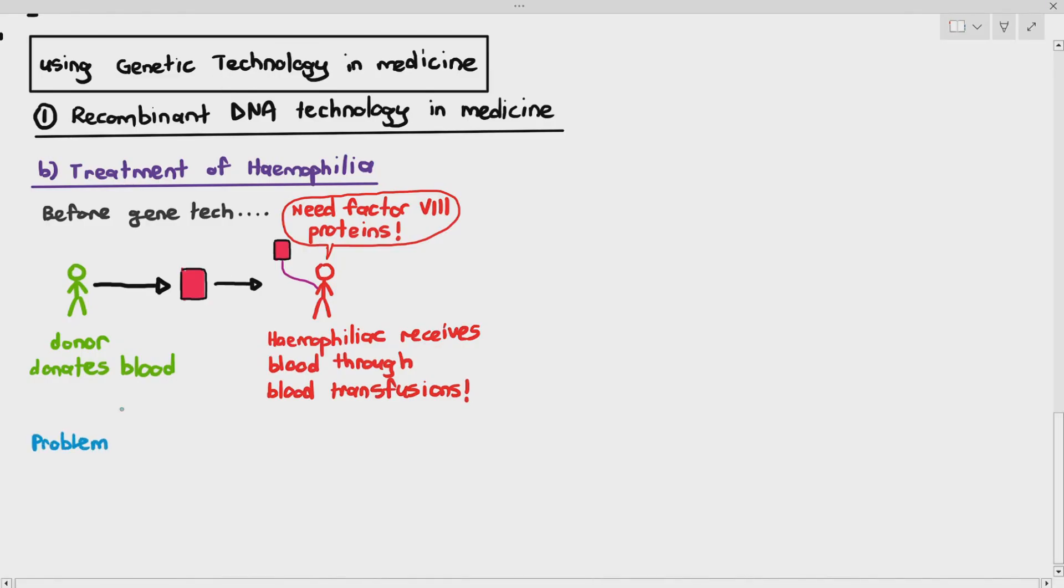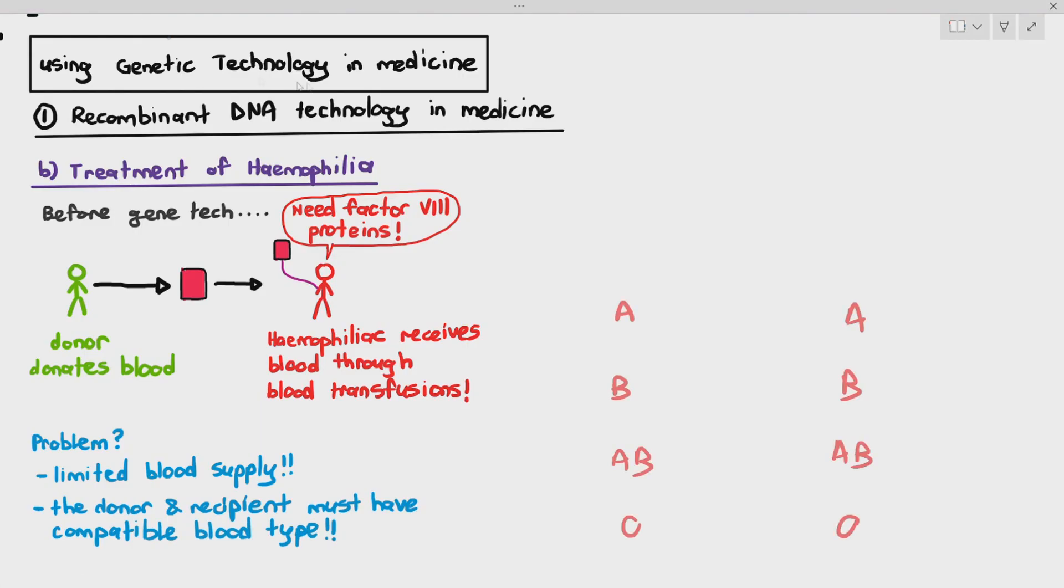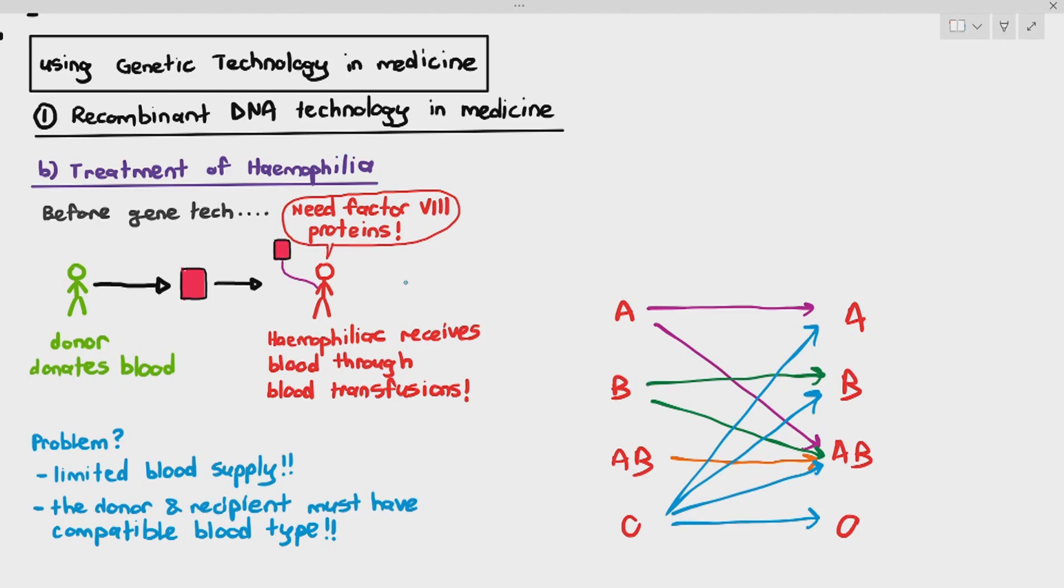So the problem here, there are some problems. There's limited blood supply because not everybody can donate blood or are willing to donate blood. Number two, the donor and the recipient must have compatible blood type. The recipient or the person who is hemophiliac, we would have to consider the source of the blood as well because if the blood is incompatible, you cannot give the blood to the person who has hemophilia because it may cause immune response to happen. We don't want that to happen.